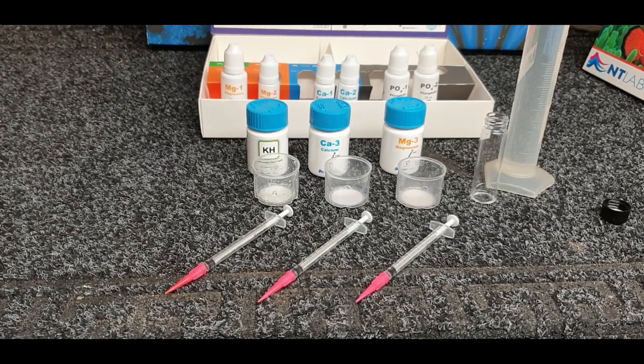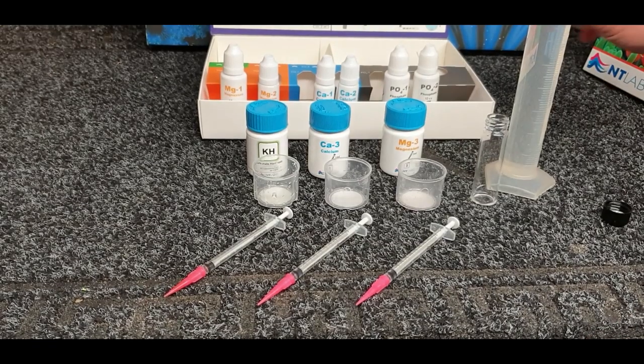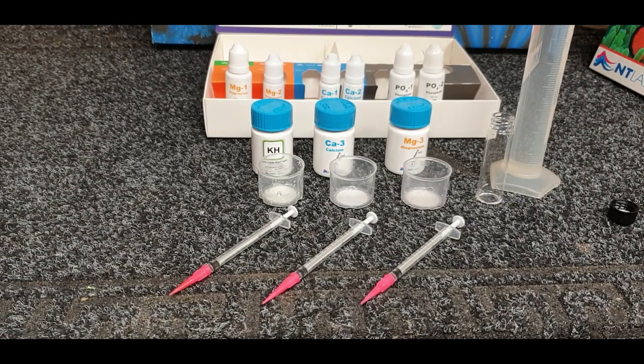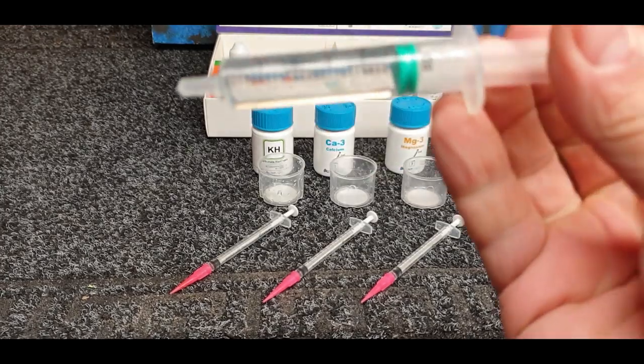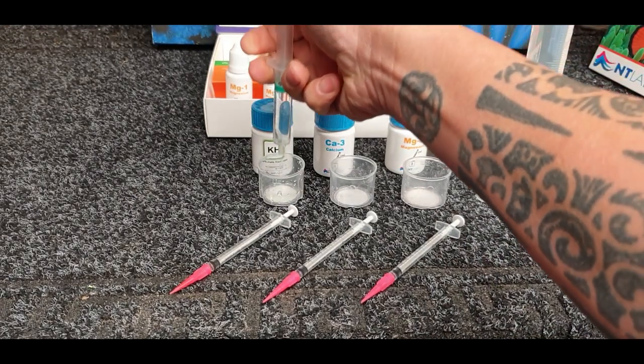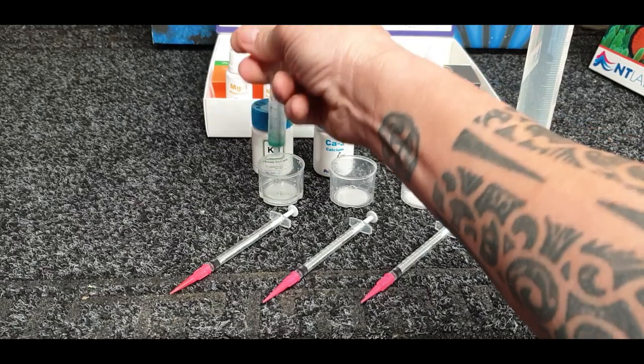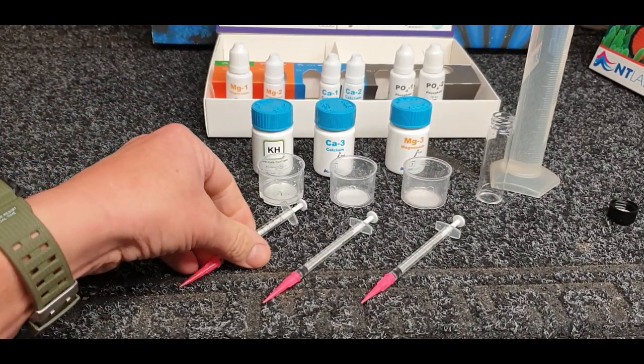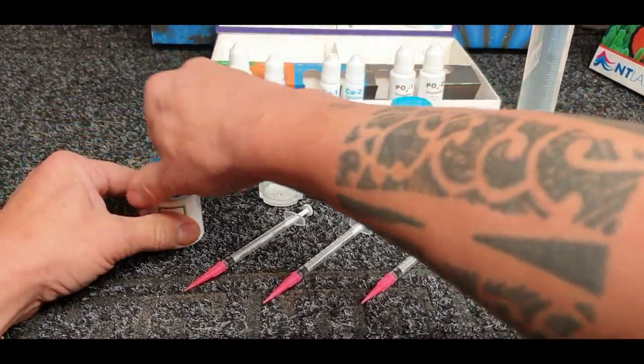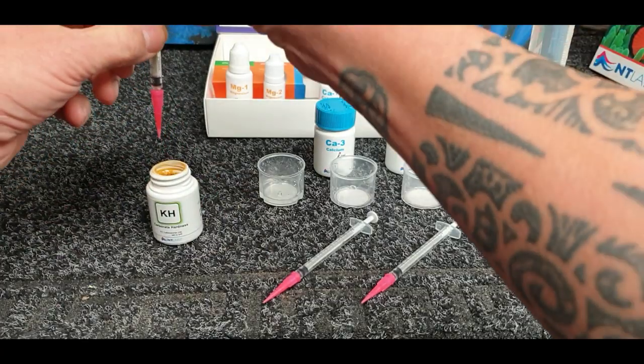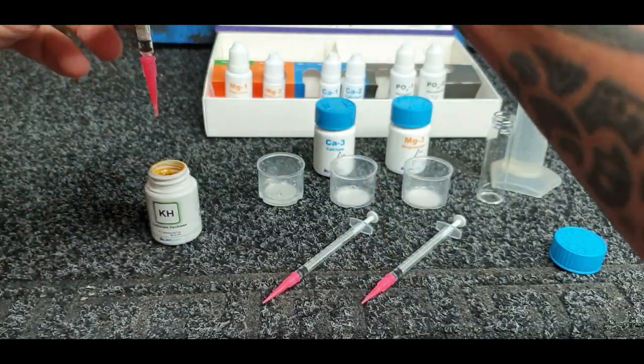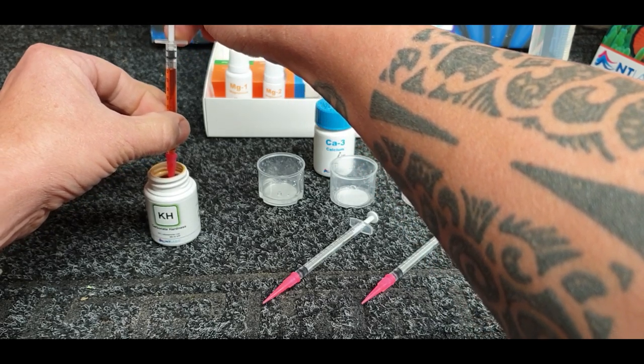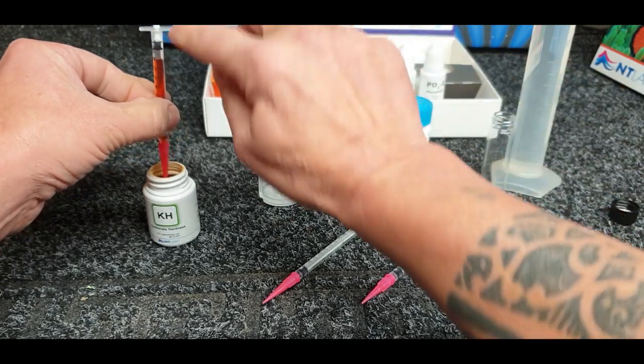The first test we're going to do is the KH test. For that you need 5ml of water, so you get your syringe, dip it into your test water, draw up 5ml and squirt that into your KH little pot. Now you've got to fill it up with the reagent from that bottle. You've got to push that tip on there nice and firm, put that into there and then draw up until you get to the 1.0 mark on the bottom of the plunger.